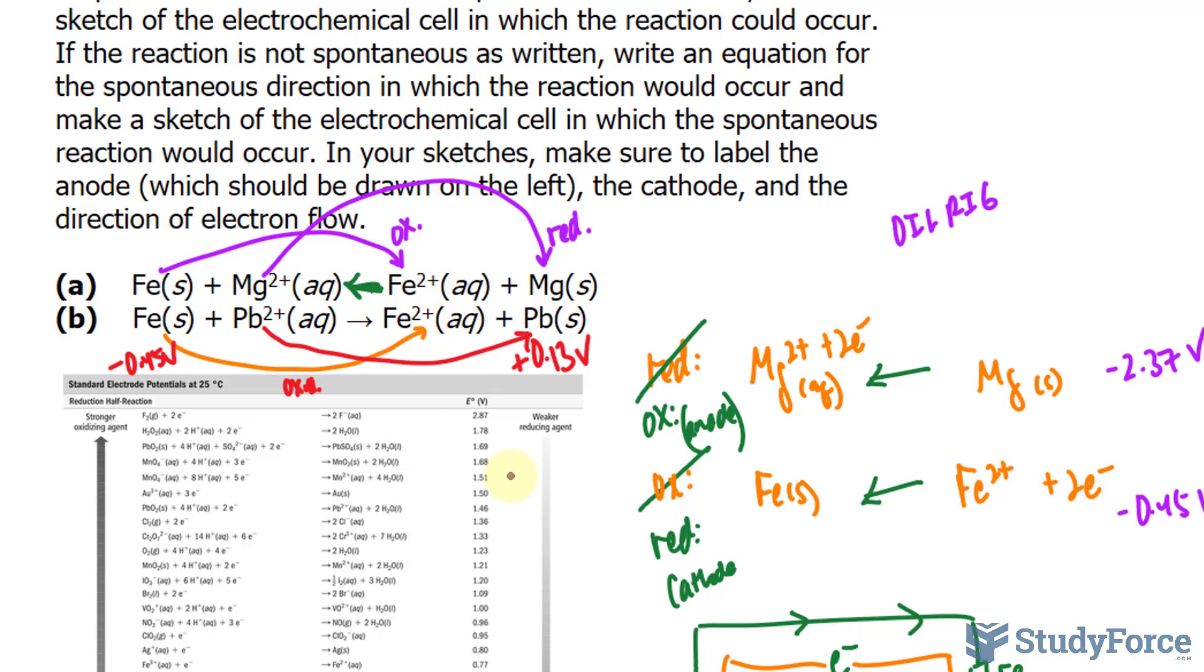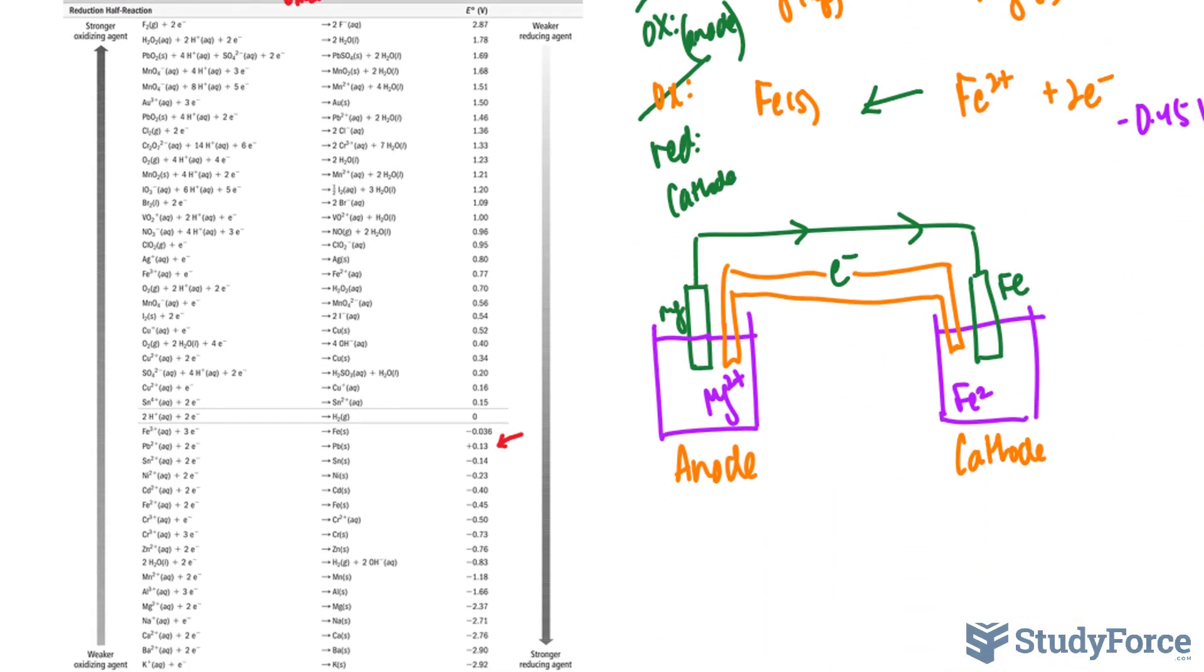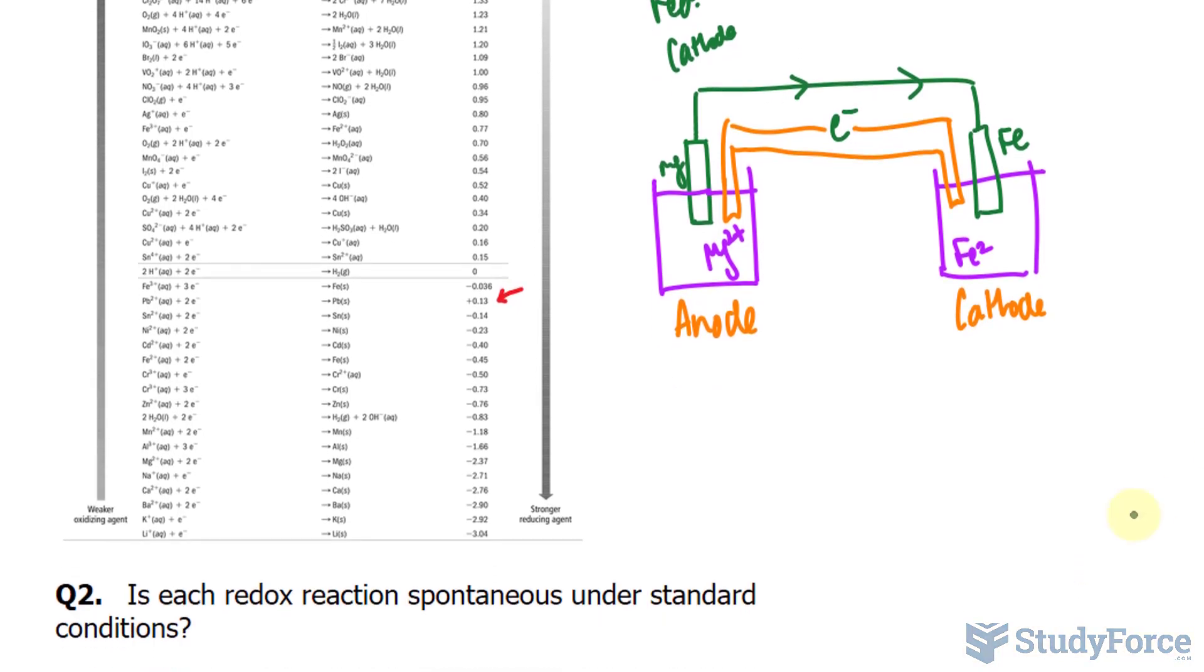That being said, this reaction is spontaneous, and it is, in fact, going in the right direction. So we can right away draw our electrochemical cell, using the same schematic as before.